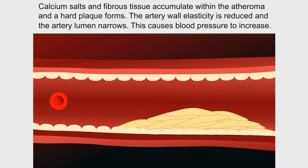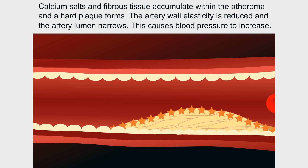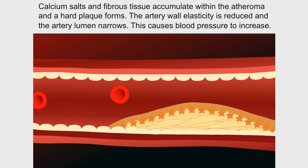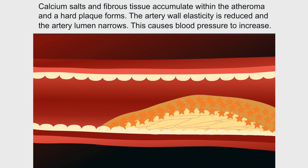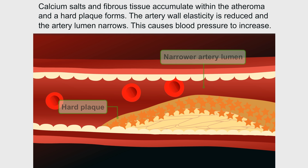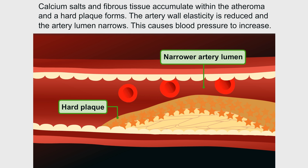Calcium salts and fibrous tissue accumulate within the atheroma and a hard plaque forms. The artery wall elasticity is reduced and the artery lumen narrows, causing blood pressure to increase.